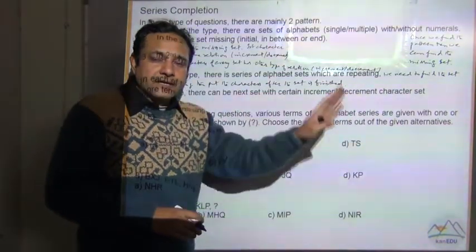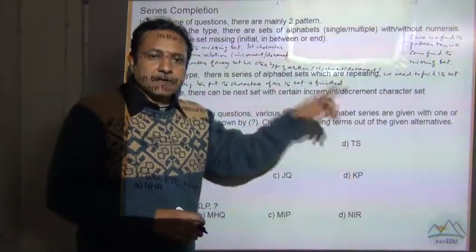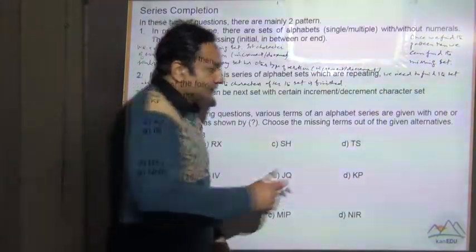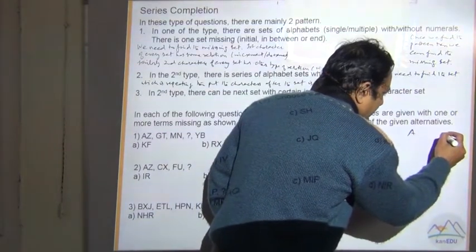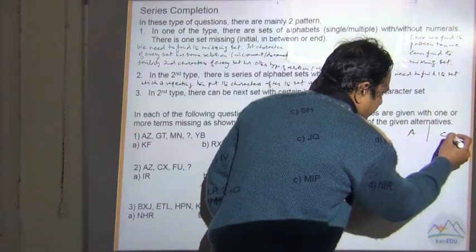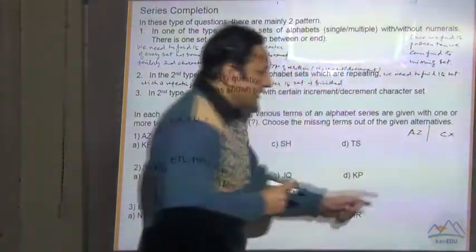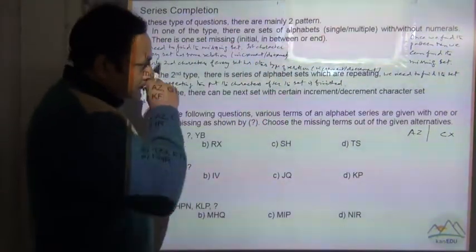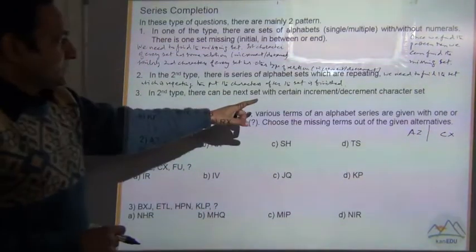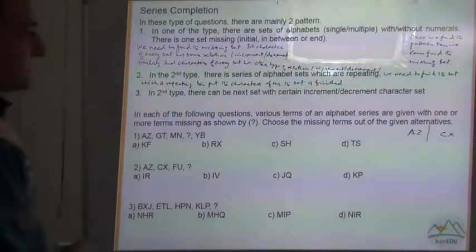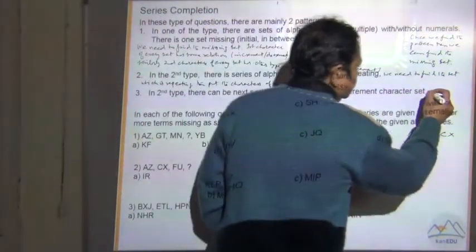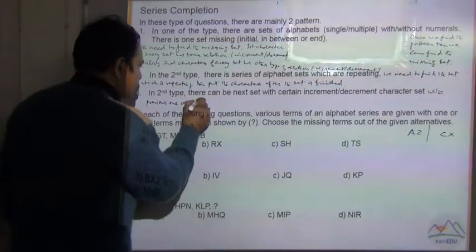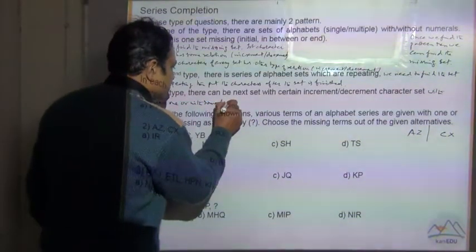When increment or decrement is mentioned, for example if the first character is A and the next is C, that is an increment — A, B, C — a one-character increment. Or it can be like A and C in the first set, and X and Z in the second set, which is a decrement — X, Y, Z — one character backward. So there can be sets with certain increment or decrement relative to the previous set or with some fixed number.